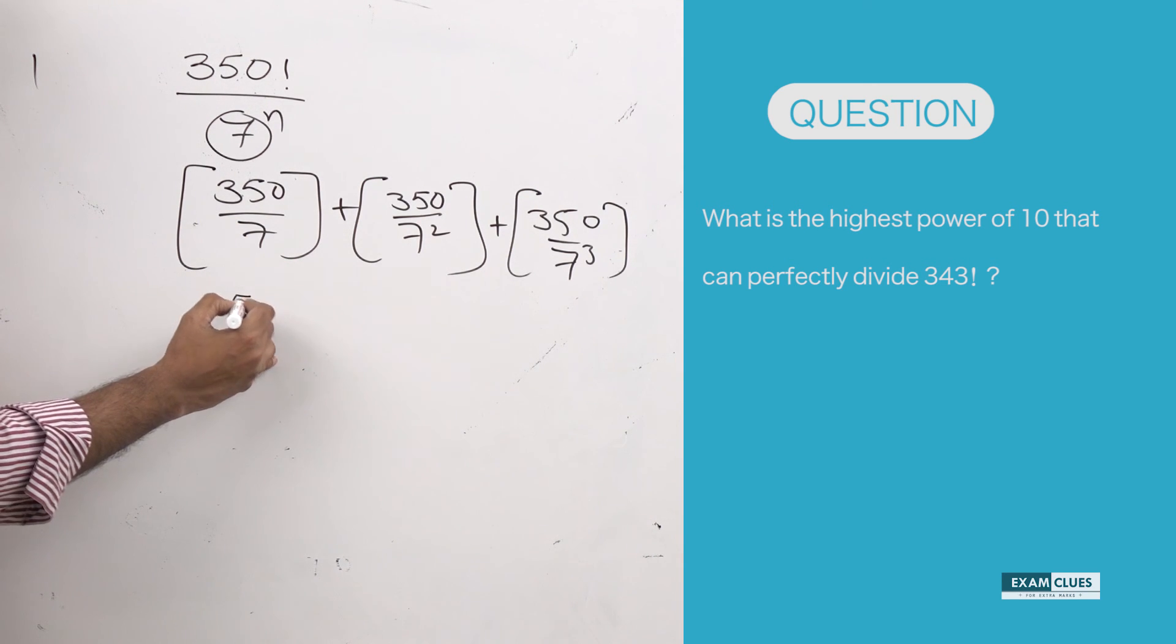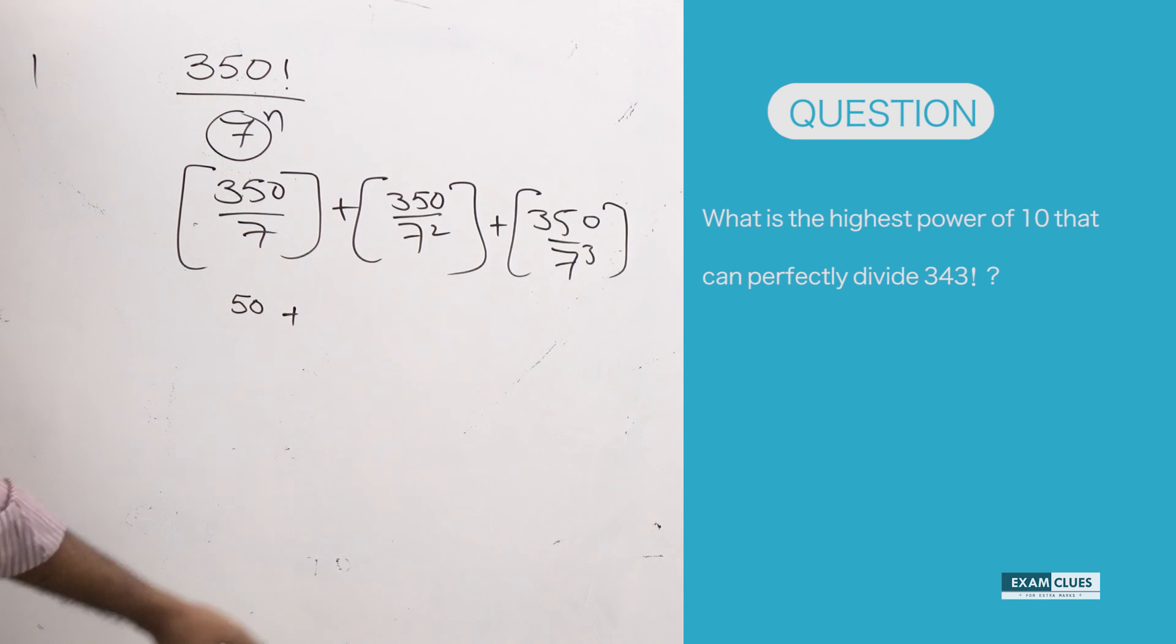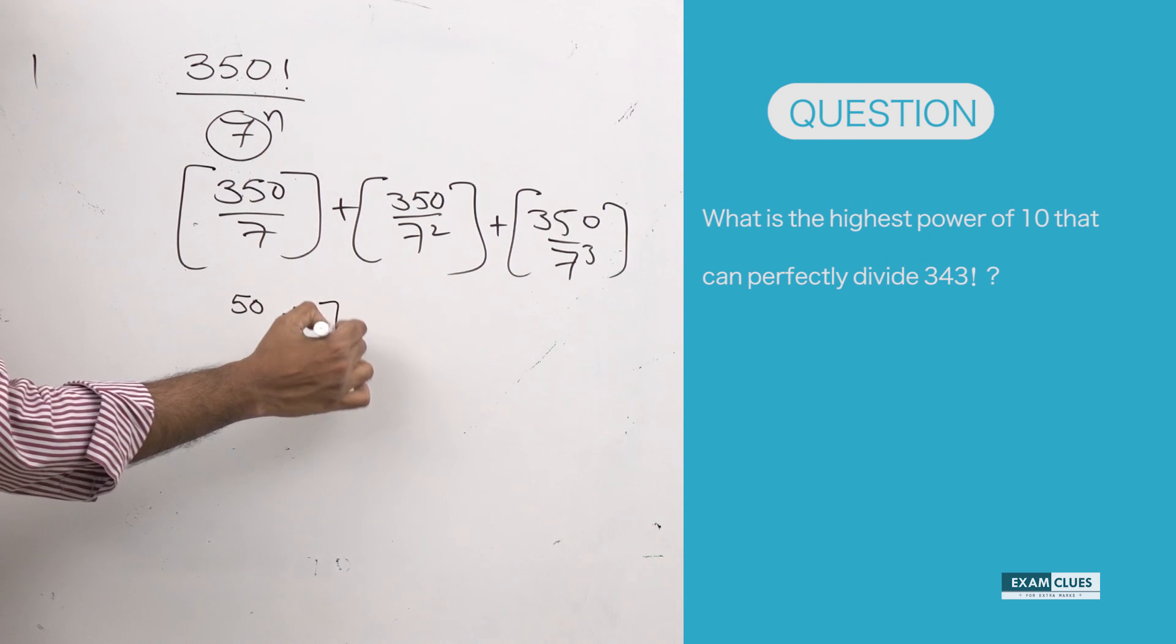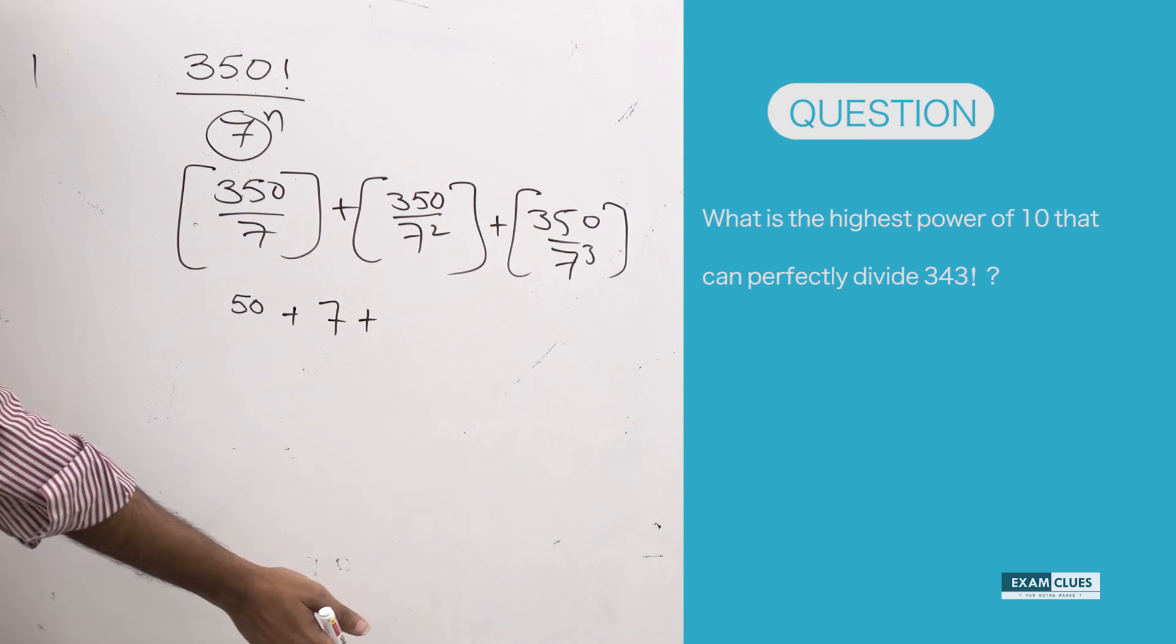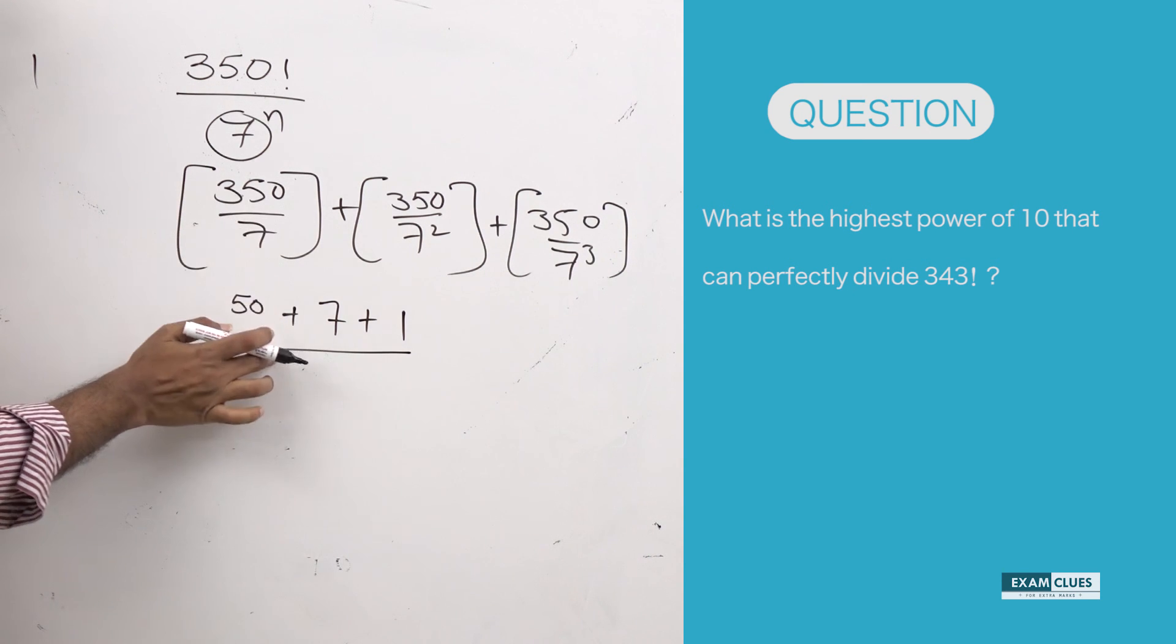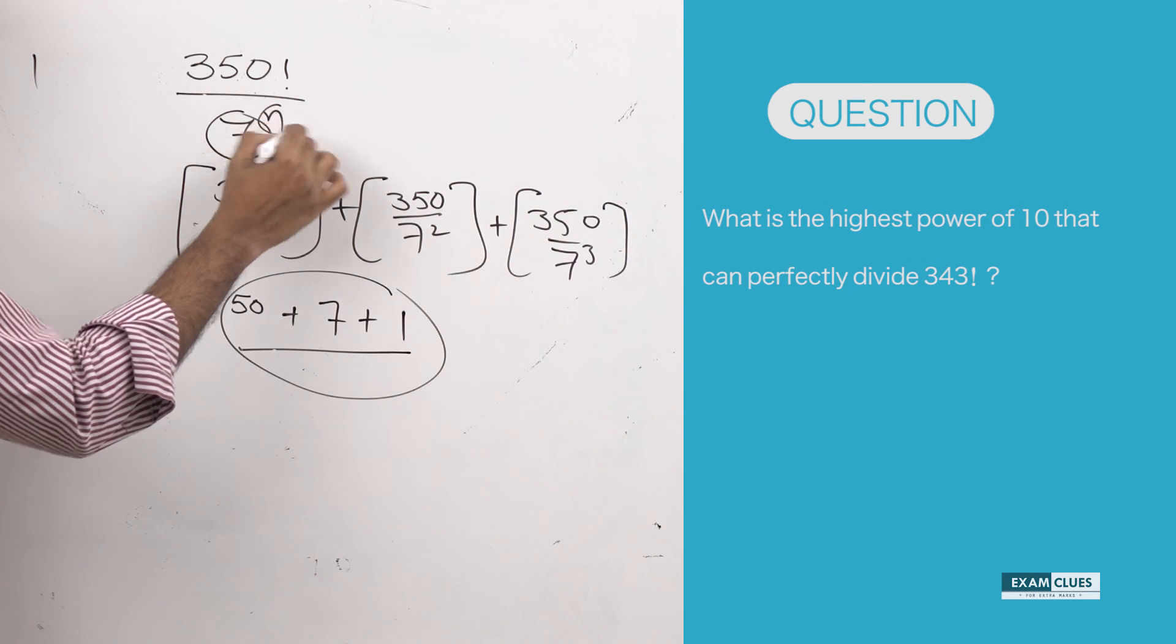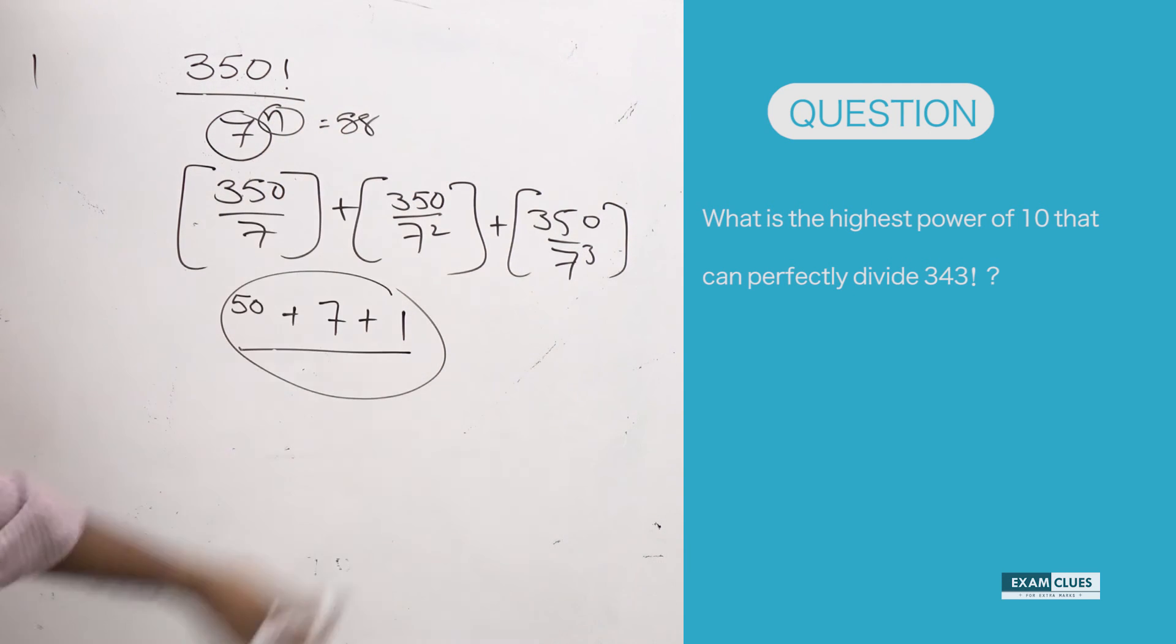So 350 divided by 7—I'm getting 50. Plus 350 divided by 49—that will be 7. Plus 350 divided by 343—it has yielded 1. So the highest power of 7 that can divide 350 factorial is 58. n is 58.